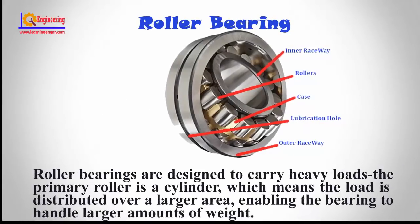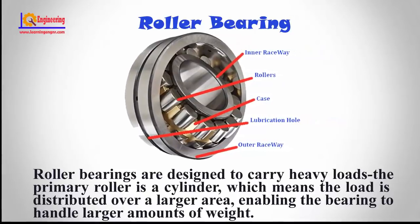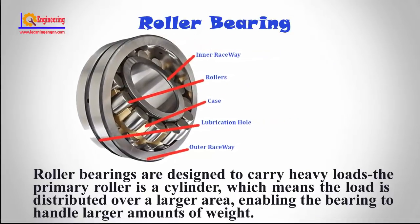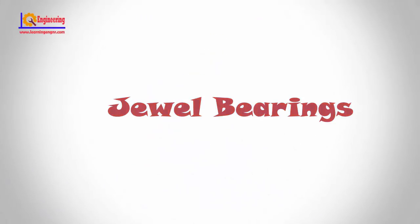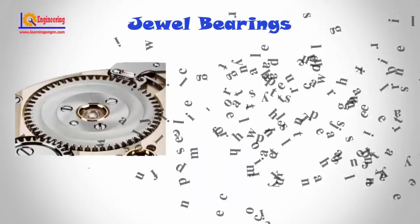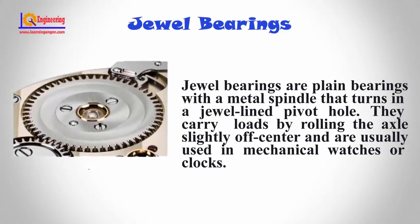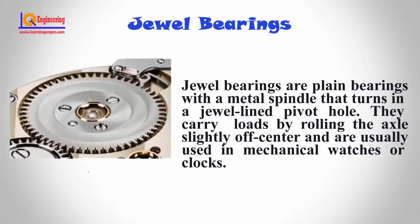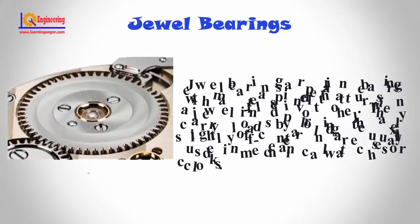Roller bearings are designed to carry heavy loads. The primary roller is a cylinder, which means the load is distributed over a large area, enabling the bearing to handle large amounts of weight. Jewel Bearings. Jewel bearings are plain bearings with a metal spindle that turns in a jewel-lined pivot hole. They carry loads by rolling the axle slightly off-center and are usually used in mechanical watches or clocks.